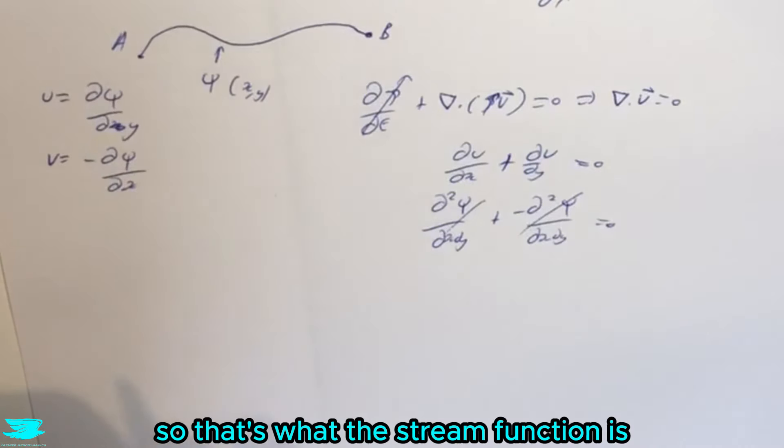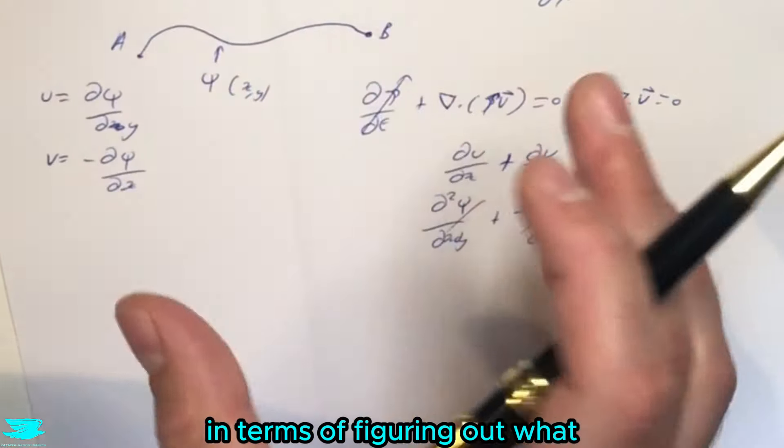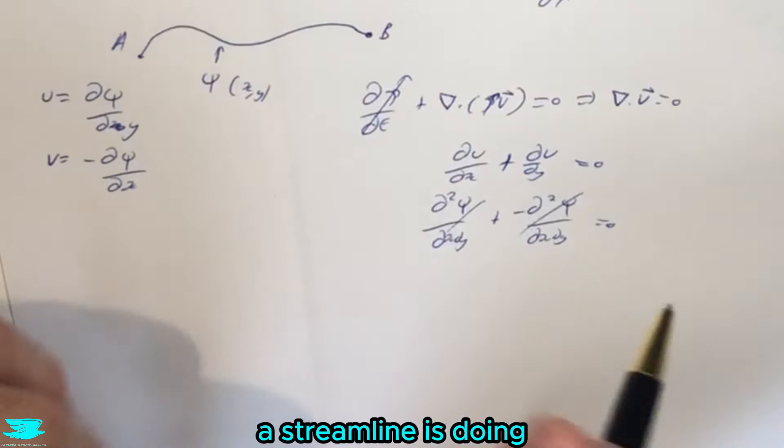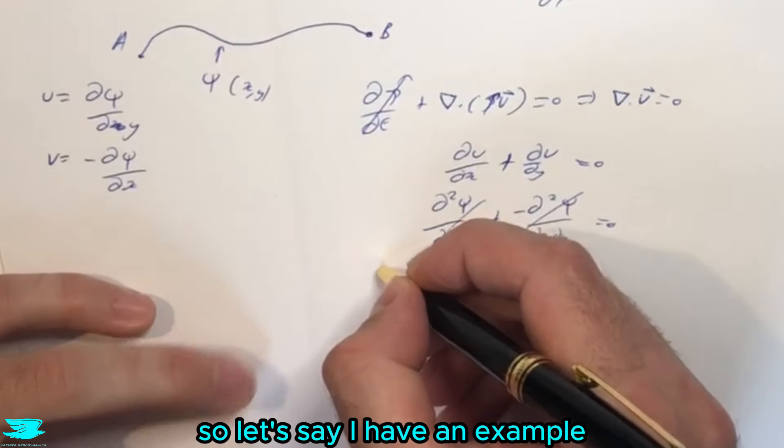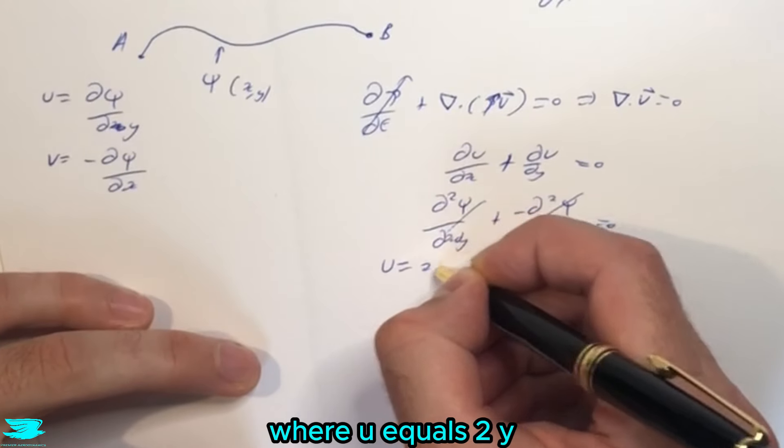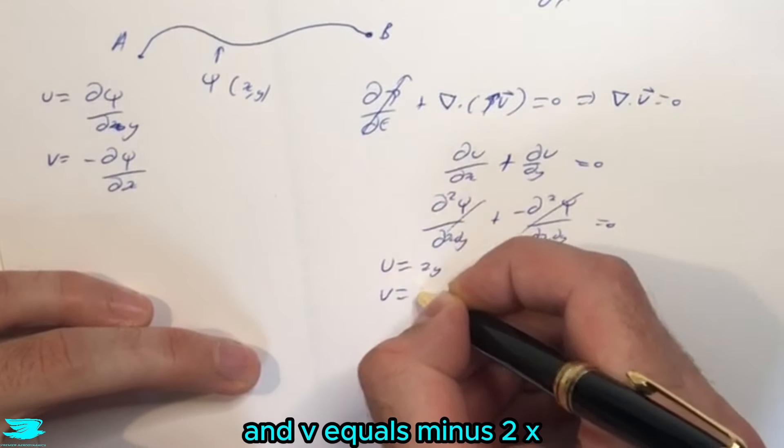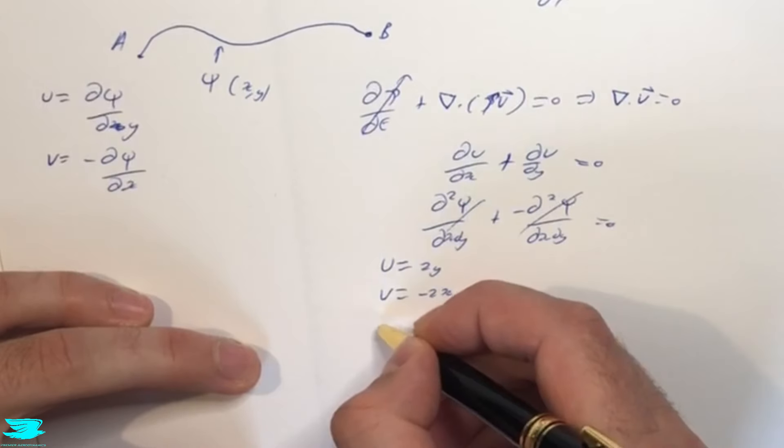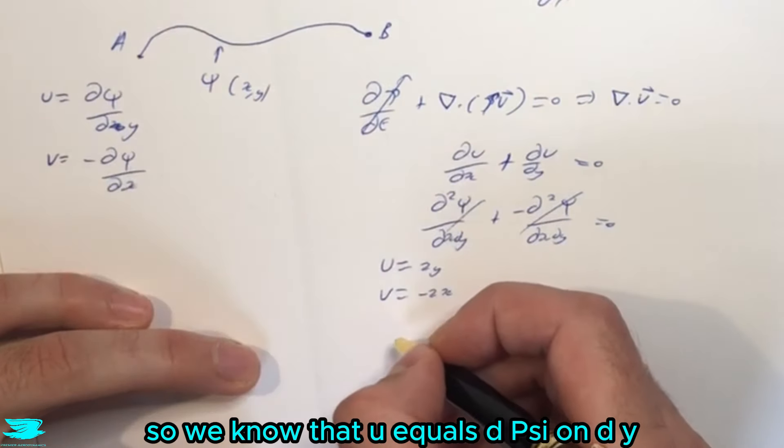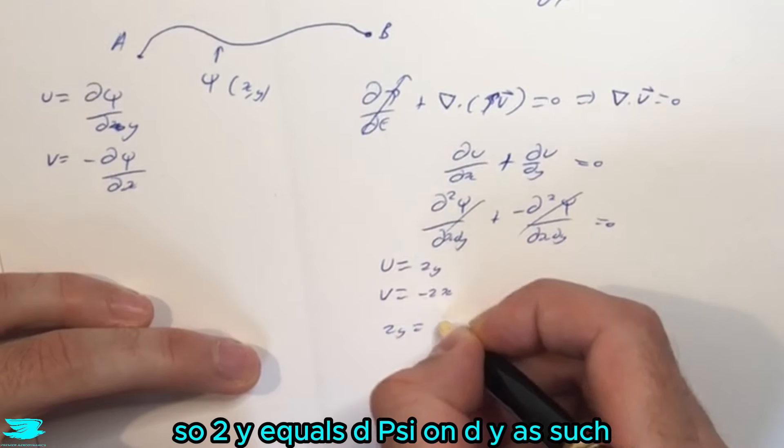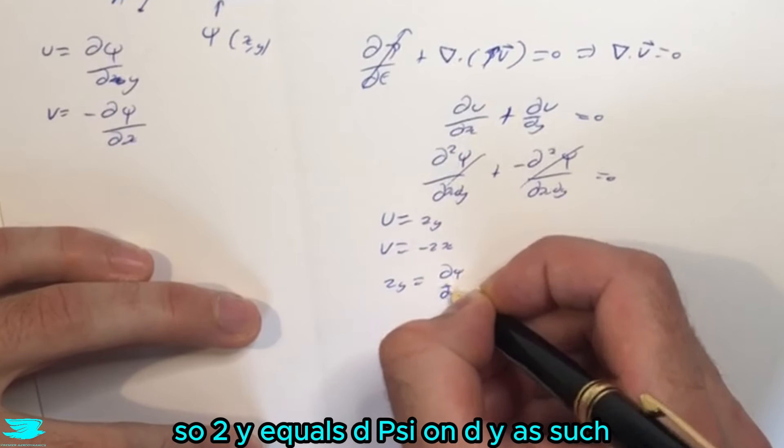So that's what the stream function is and what we can use it for in terms of figuring out what a streamline is doing. Let's go through an example as to how to calculate this value. So let's say I have an example where u equals 2y and v equals minus 2x. We know that u equals d psi on dy, so 2y equals d psi on dy.